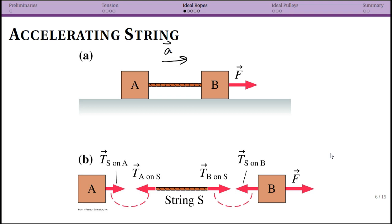In an acceleration condition, the acceleration of block A must equal the acceleration of the rope, which must equal the acceleration of block B. That's true because these things are tied together by the rope. As long as the string does not stretch or go limp, this constraint holds. A situation where it does stretch is way beyond the scope of intro physics.